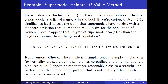Listed below are the heights in centimeters for the simple random sample of female supermodels. Use a 0.01 significance level to test the claim that supermodels have heights with a standard deviation that is less than sigma equals 7.5 centimeters for the population of women. Does it appear that heights of supermodels vary less than the heights of women from the general population?